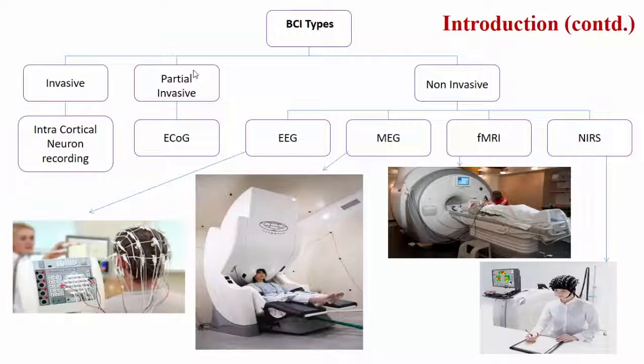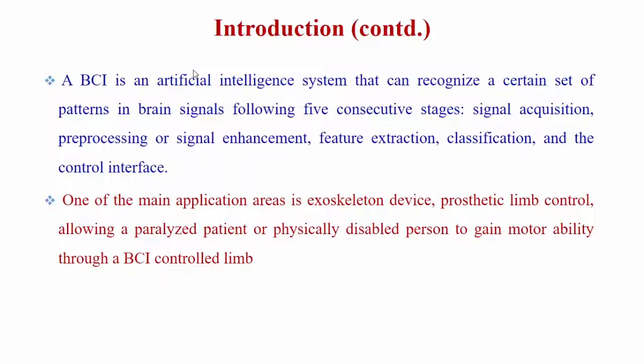I am concentrating on the non-invasive type, which is electroencephalography. There are five stages in the BCI pipeline: signal acquisition, pre-processing or signal enhancement, feature extraction, classification, and then the output is used to control interfaces such as a prosthetic limb, exoskeleton device, or home appliances. One main application area is allowing paralyzed or physically disabled persons to gain motor ability through controlled limbs.